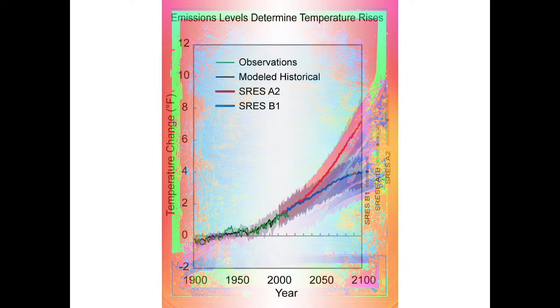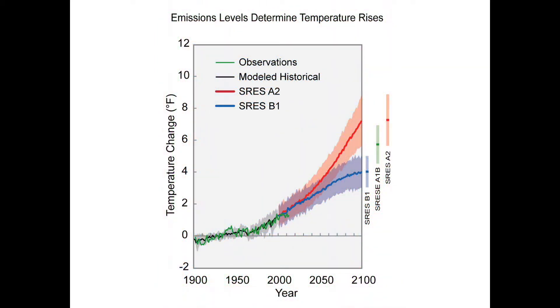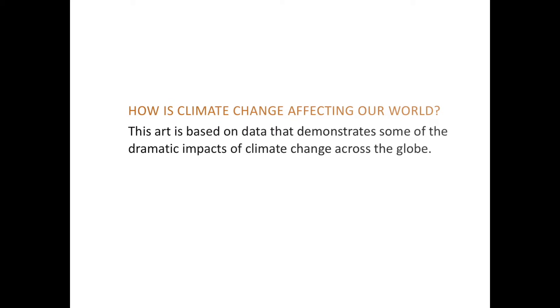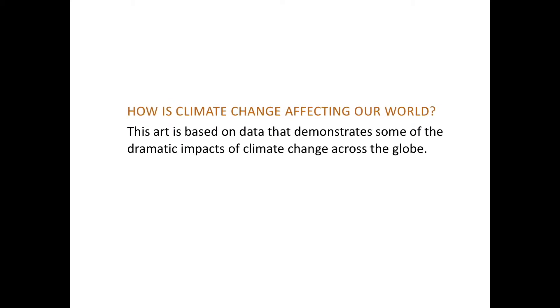You create pieces from climate charts, graphs, maps, and sometimes words or numbers that have a key meaning or tie back to a key fact. How do you go from the climate charts to the art?